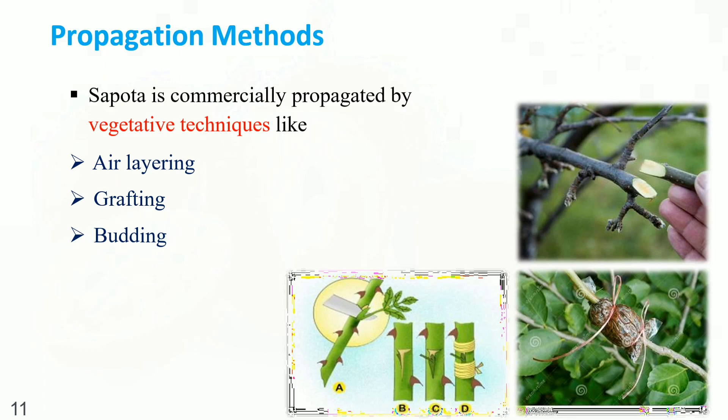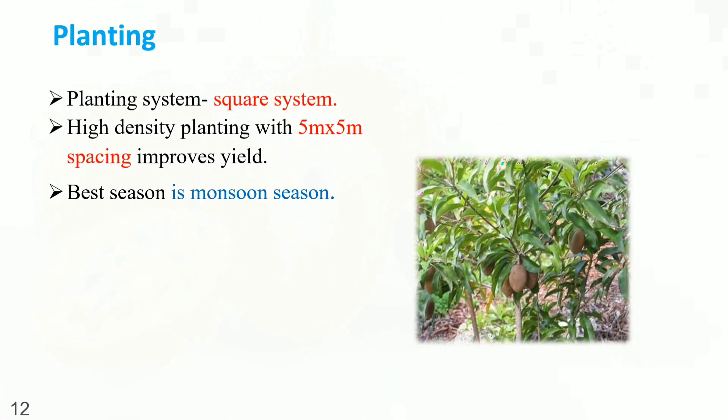Propagation methods. Spotter is commercially propagated by vegetative techniques like air layering, grafting, and budding. Planting system: Square system with high density planting at 5 m x 5 m spacing for improved yield. The best season for planting is the monsoon season.